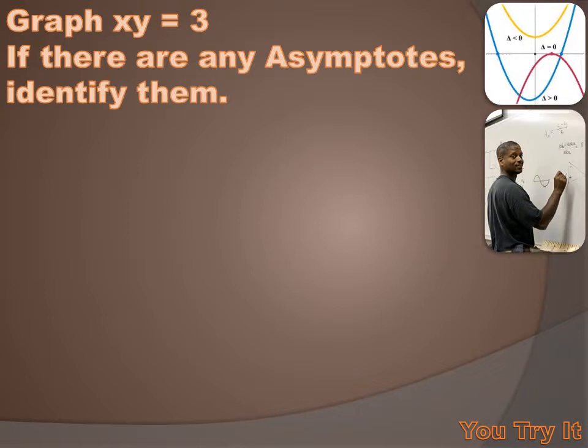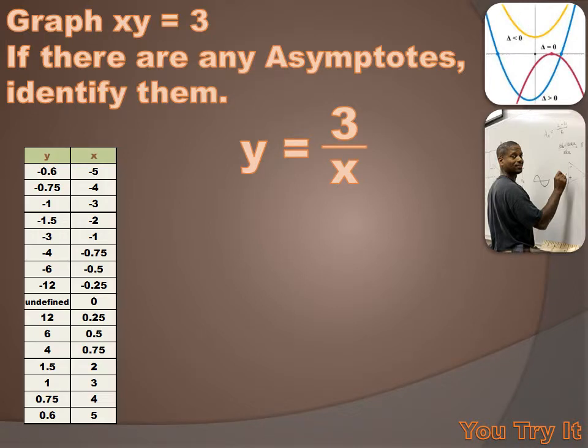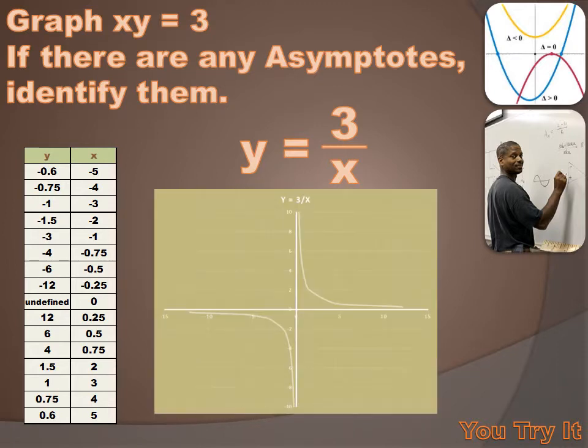Well, we're asked to graph xy equals 3. And you're going to probably want to create a table to do that. And you're probably going to want to put xy equals 3 into standard form. In other words, I want it to read y equals something. So I'll divide both sides of the equation by x. And I'll get an inverse variation format, y equals 3 divided by x. Now I'll create a table of x values and y values. And I'll graph those values. And sure enough, I get a hyperbola.